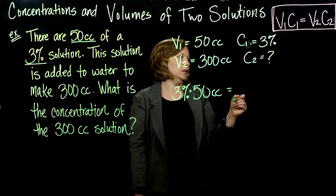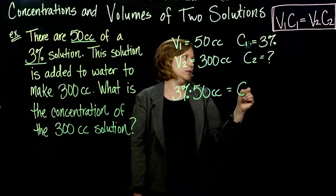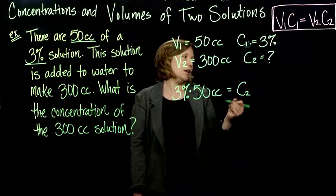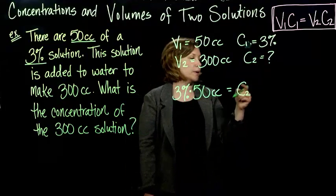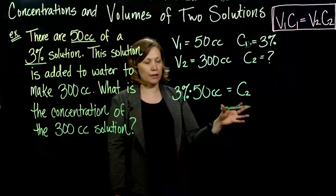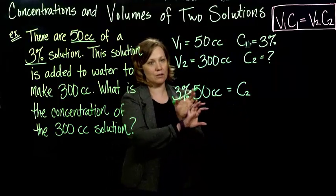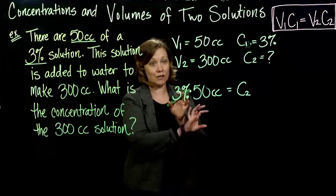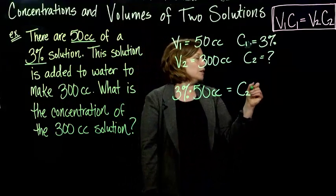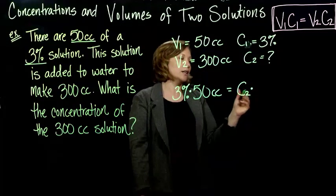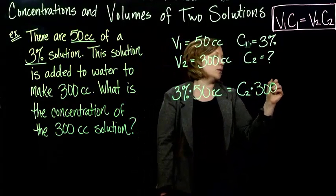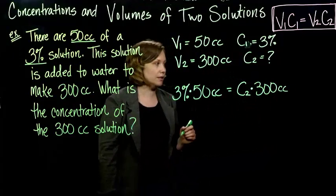And then I have my C2. Well I guess in the formula they do the volume first, but do you know why it doesn't matter here? Because multiplication is commutative, so if I do the 3% times the 50, it's the same as doing the 50 times 3%. So I apologize if that's a little confusing, that it doesn't match up perfectly, but I promise it does mean the same thing.